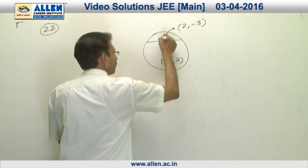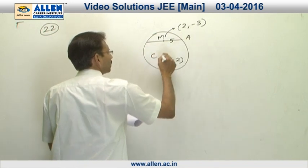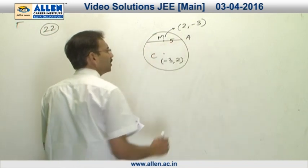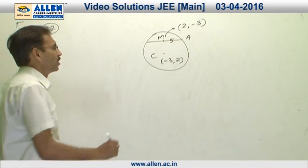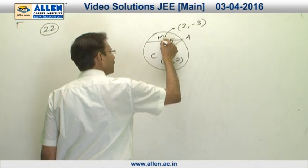If I call this as point m, this is capital A and this is C. Then, m a length will be 5 unit. We have to calculate the radius of this circle s. This length will be C a.